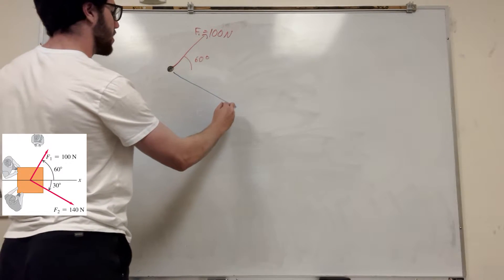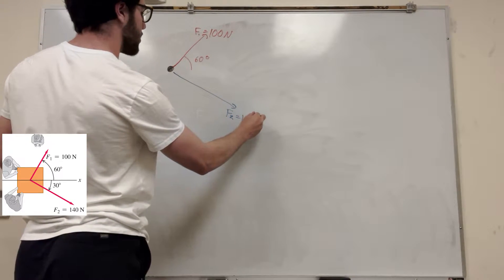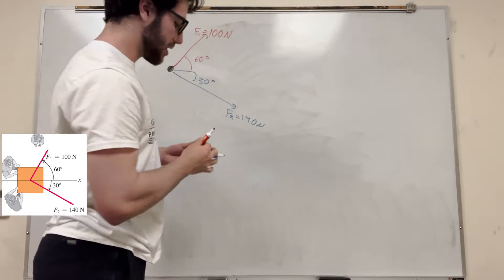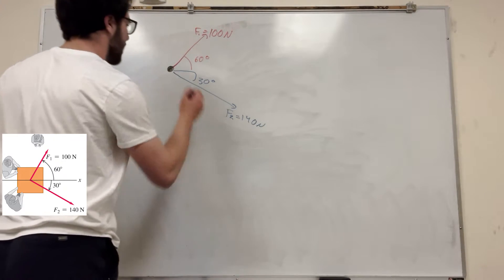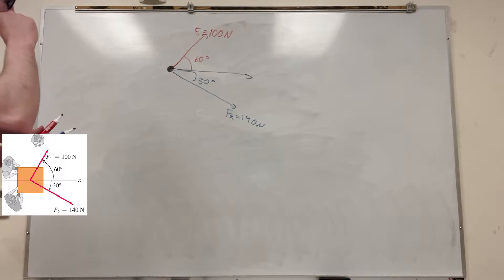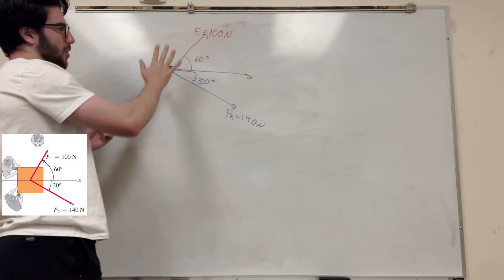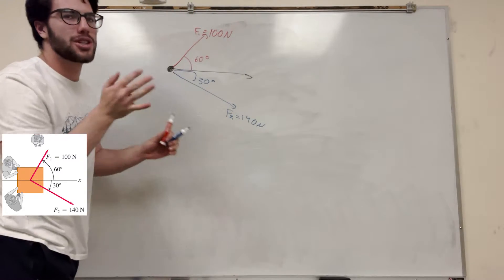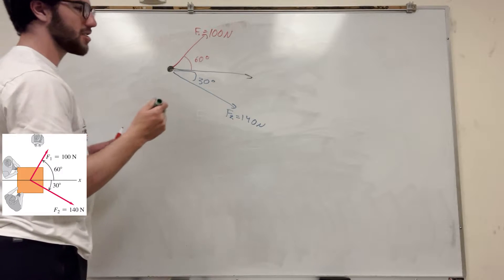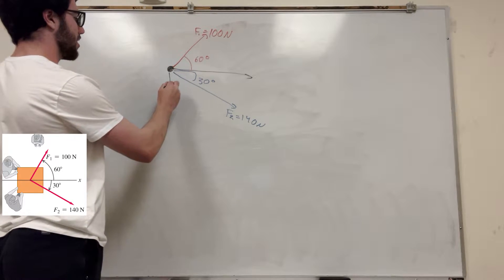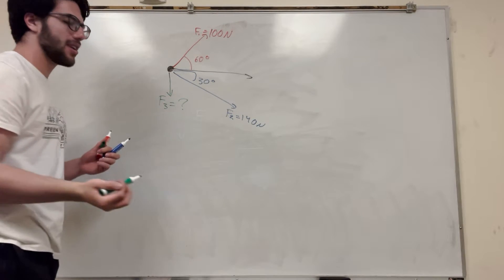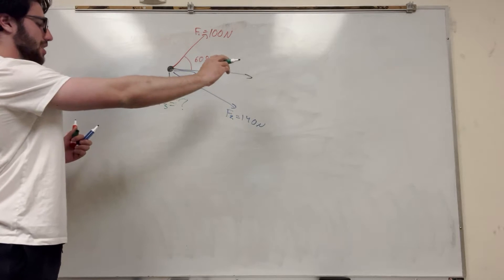Force two goes this way — 140 newtons — and its angle is 30 degrees. We want the system to go just in the X direction. I feel like it's going to go upward because we're pushing more at this angle and this guy's kind of pushing down at an angle. So that means we need to bring in the third force, which is the child. The child is going to push directly downward, and the question is how much force is needed to make it go straight in the X direction.